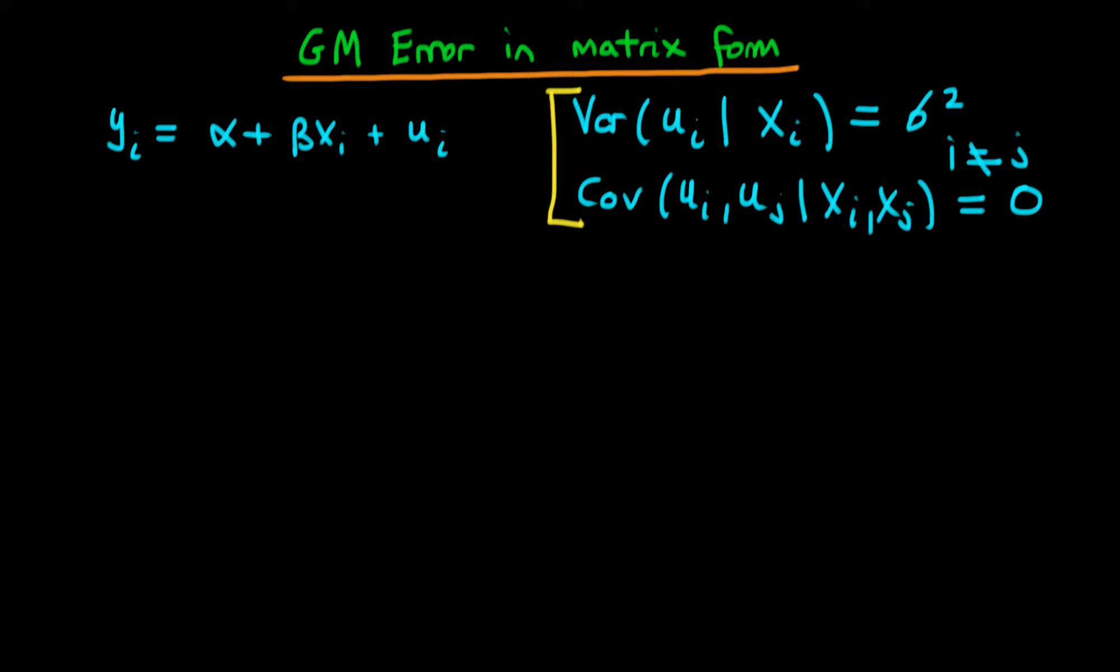In matrix form we can rewrite this equation in the form which we've become accustomed to which is y where y with the line underneath represents a vector of our dependent variable equal to X times β where X holds all of our independent variables and β is a vector of the parameters of our model plus a vector of our errors u.